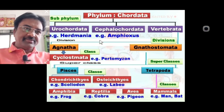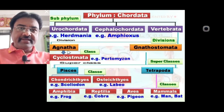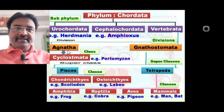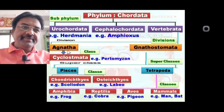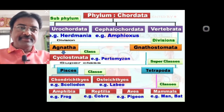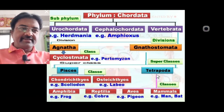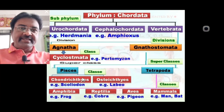Sub-phylum Vertebrata is divided into two divisions: Agnathostomata and Gnathostomata. Division Agnathostomata contains only one class known as Cyclostomata — the circular mouth present animal group, containing animal Petromyzon. Division Gnathostomata is further divided into two superclasses: Pisces and Tetrapoda.